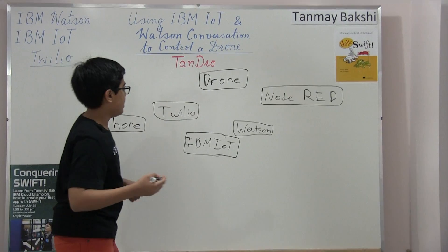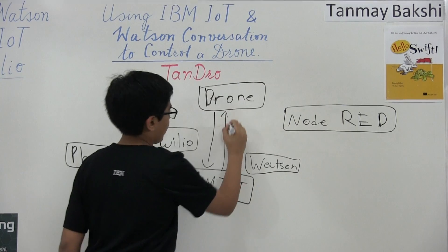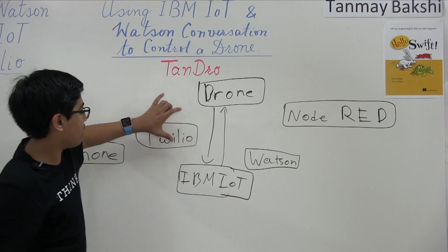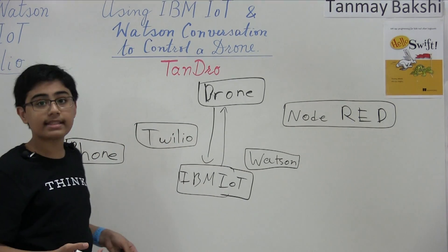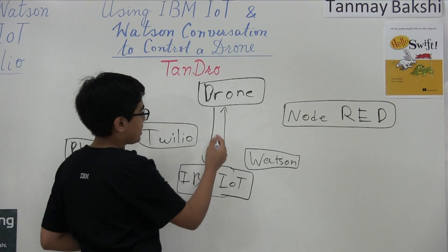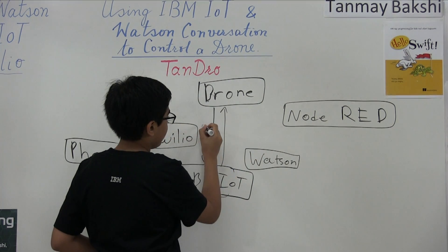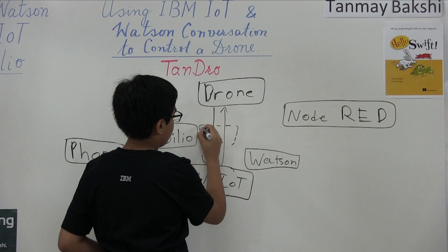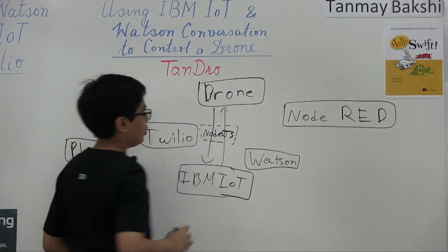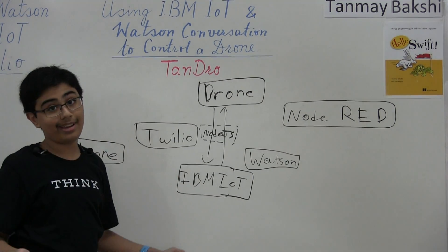First, I set up the connection between the drone and IBM IoT. That's one of the most essential parts — ensuring the drone can communicate with IBM IoT on Bluemix so we can actually transfer data. This is technically done through Node.js code, which allows communication between the drone and IBM IoT.